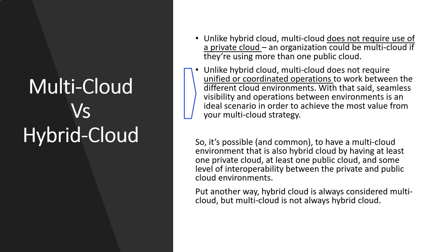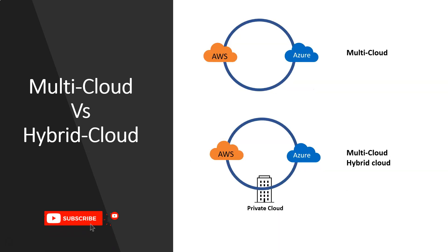As long as the environments are connected, that is good enough for multi-cloud, but hybrid cloud is more tightly coupled with uniform coordinated operations. With that said, seamless visibility and operation between environments is the ideal scenario to achieve the most value from a multi-cloud strategy. In normal terms, it's possible to have a setup that is both multi-cloud and hybrid cloud. Put another way, hybrid cloud is always considered multi-cloud, but multi-cloud is not always considered hybrid cloud.